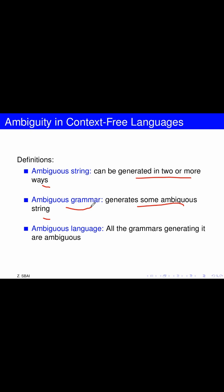Now if we can't find any grammar that is not ambiguous and that generates the language, we'll say that the language is inherently ambiguous.